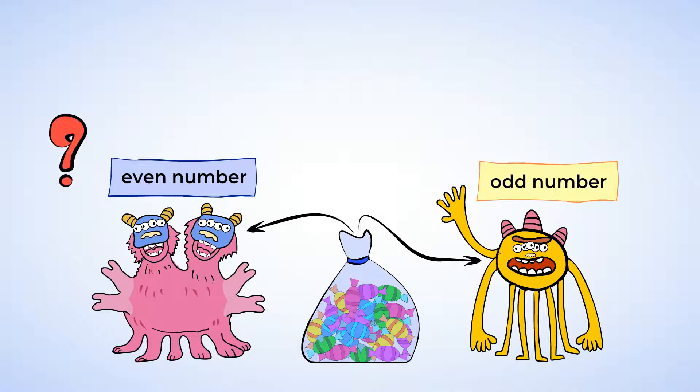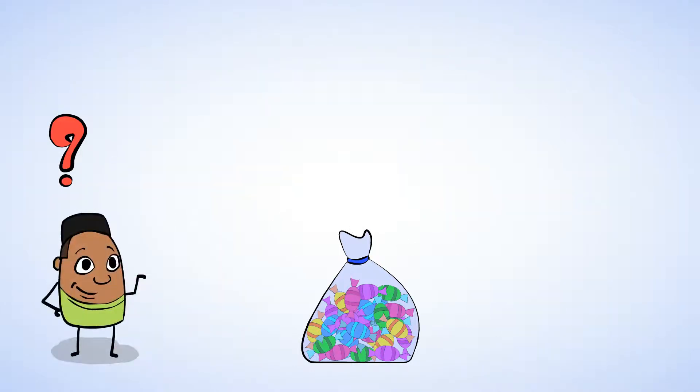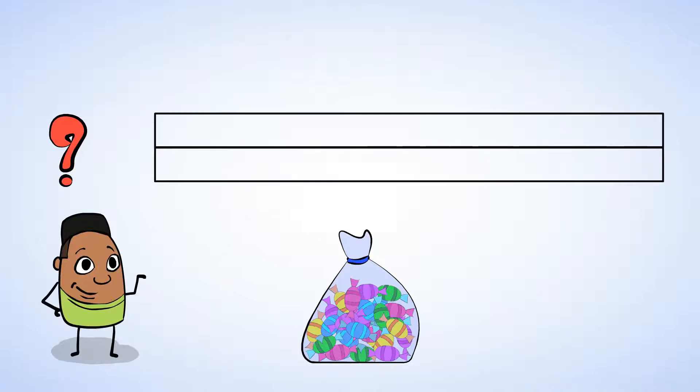Now, let's help them figure out who gets the next piece of candy. Let's do the same thing we did with the dog toys and put them into two rows. That helped us stay organized, didn't it? So, let's see. One candy goes here. The next one goes here.